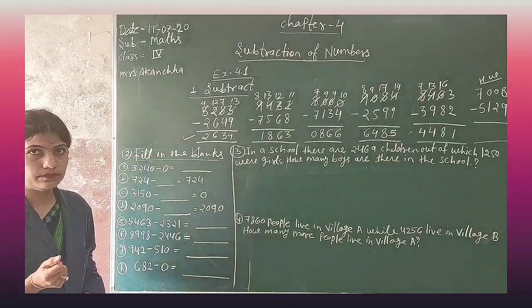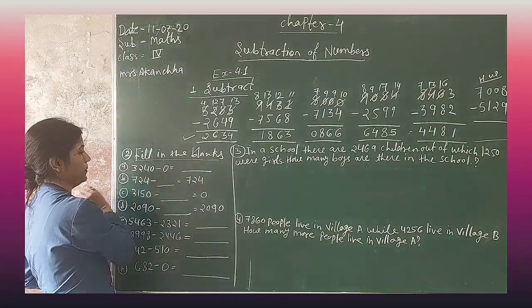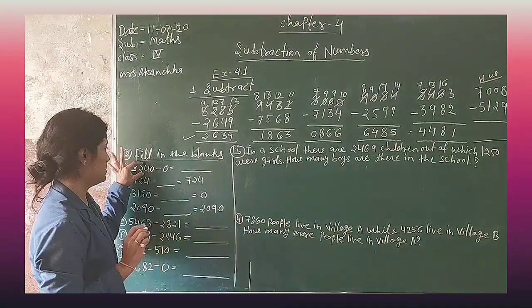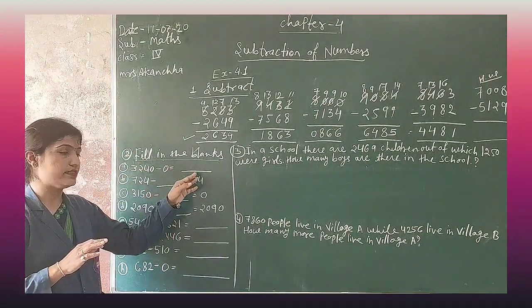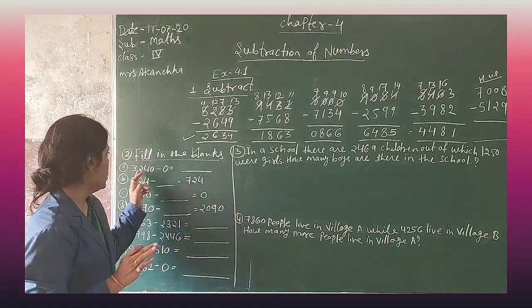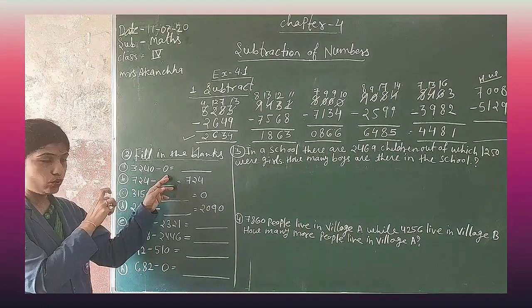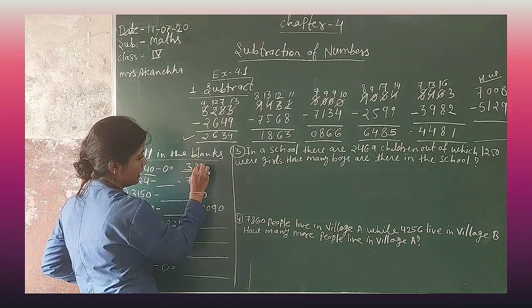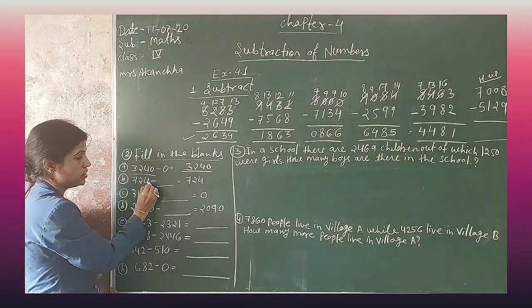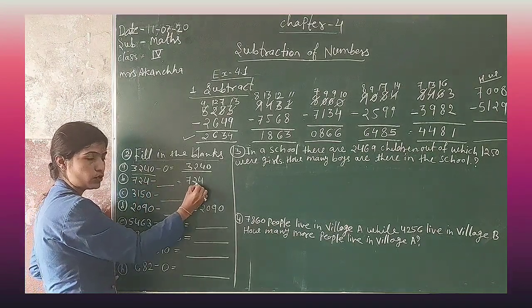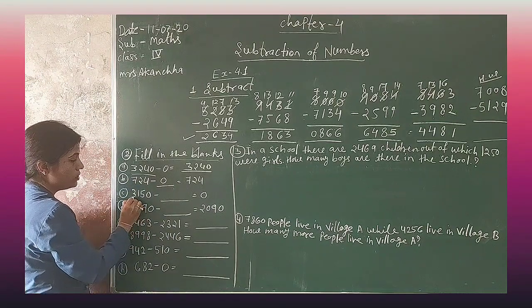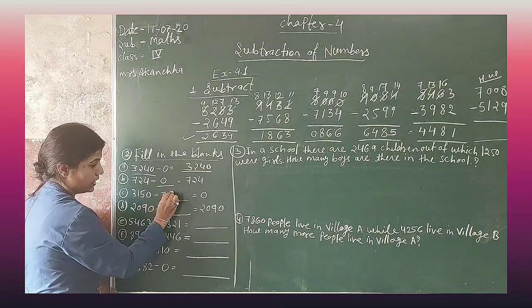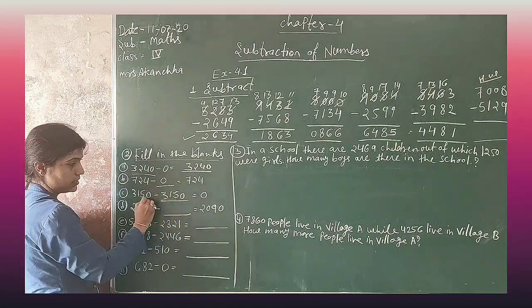Question 2: fill in the blanks. 3240 minus 0. If you subtract any number with the same number, you will get answer 0. But if you subtract any number with 0, the answer is that same number — 3240. 3150 minus dash equals 0, so 3150 minus the same digit gives answer 0.